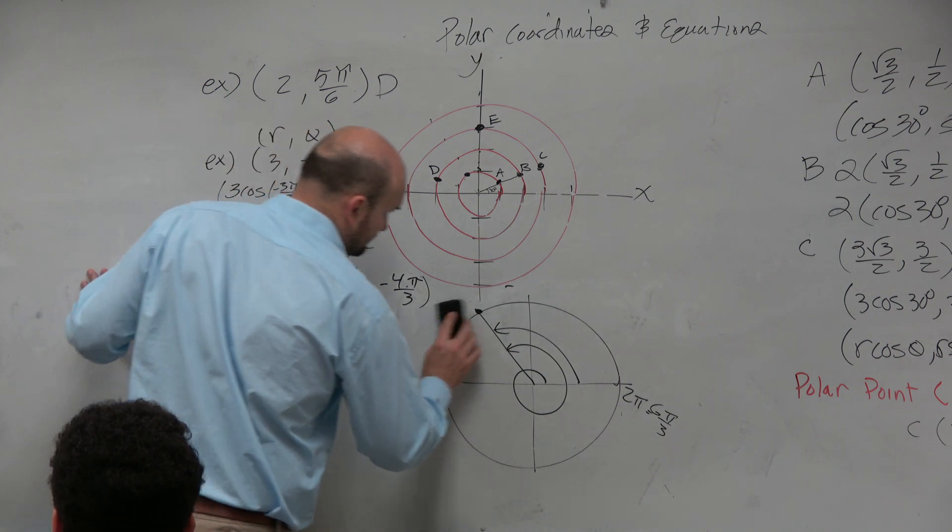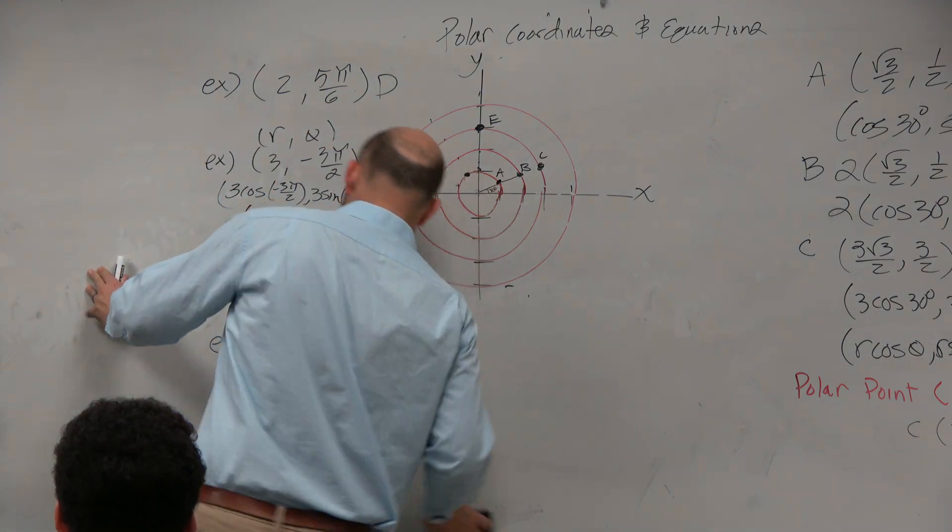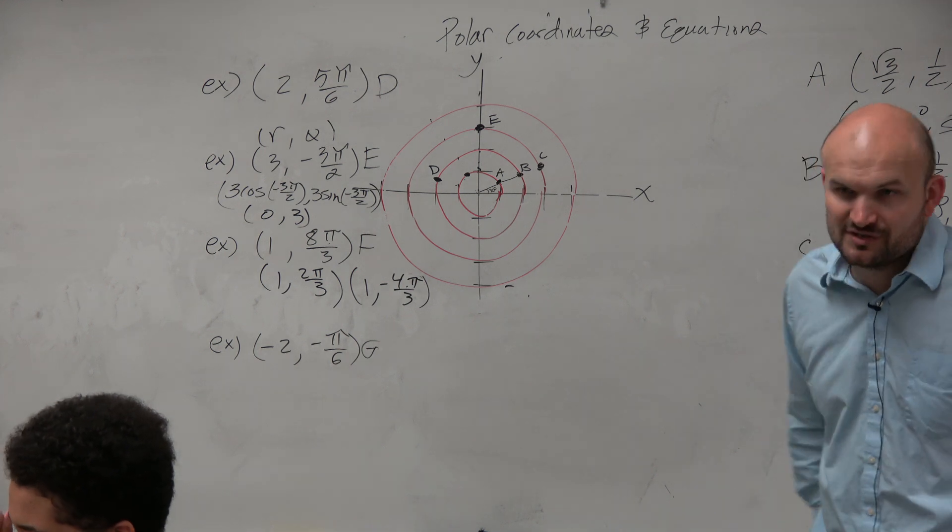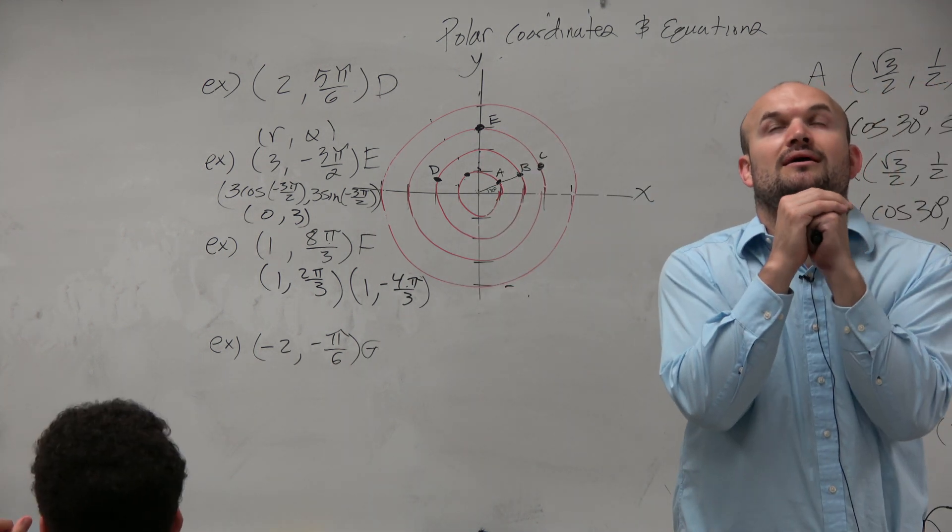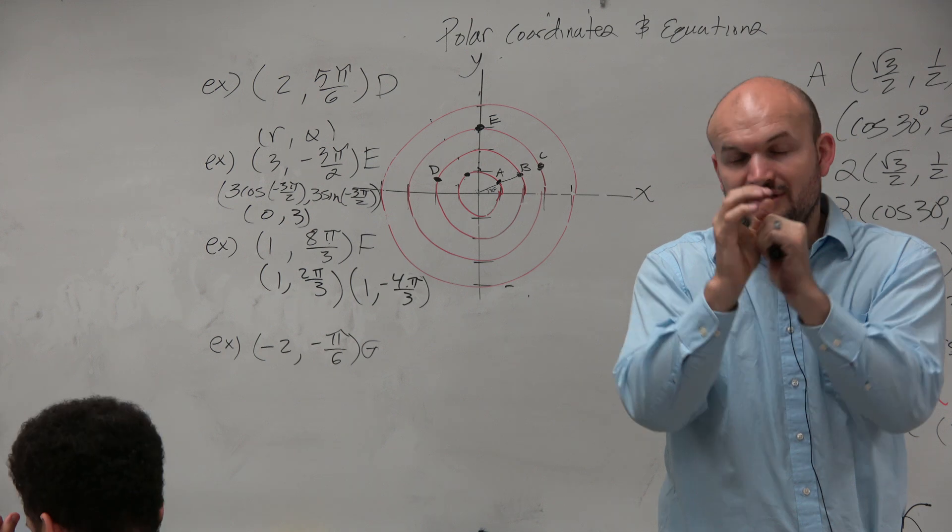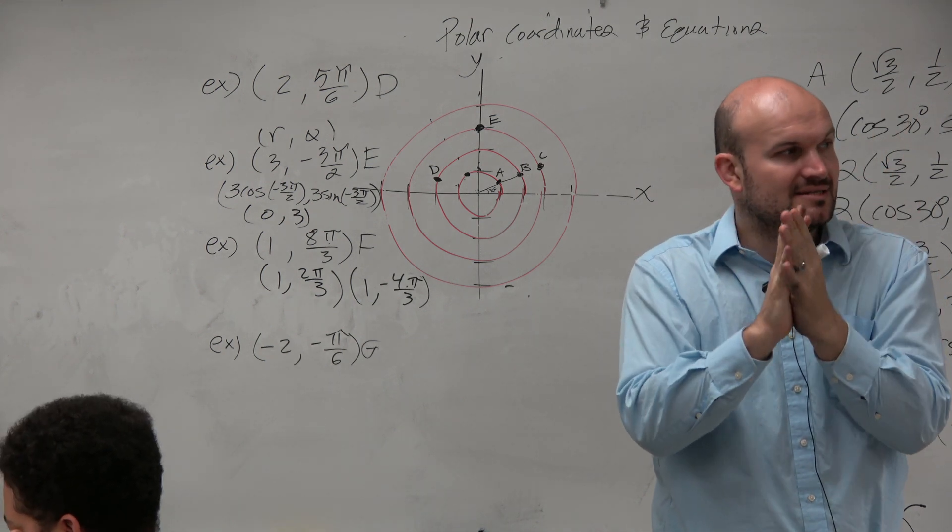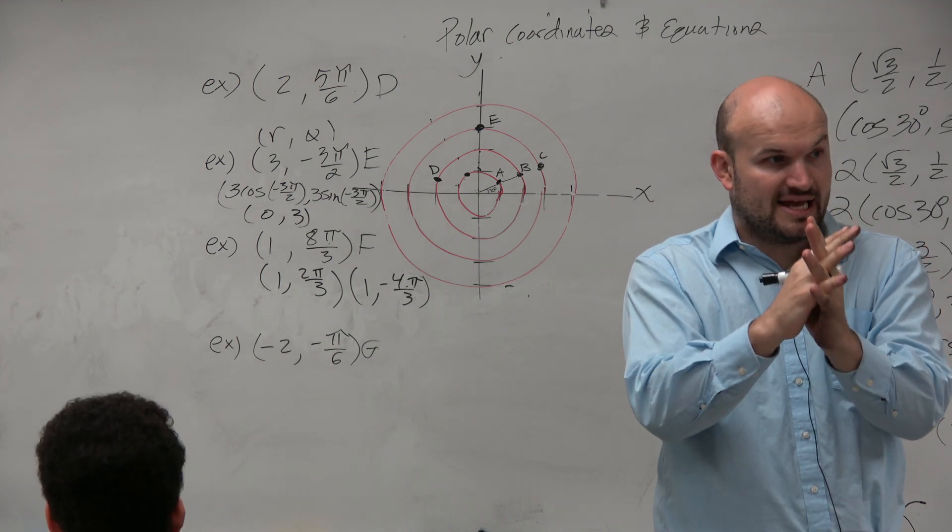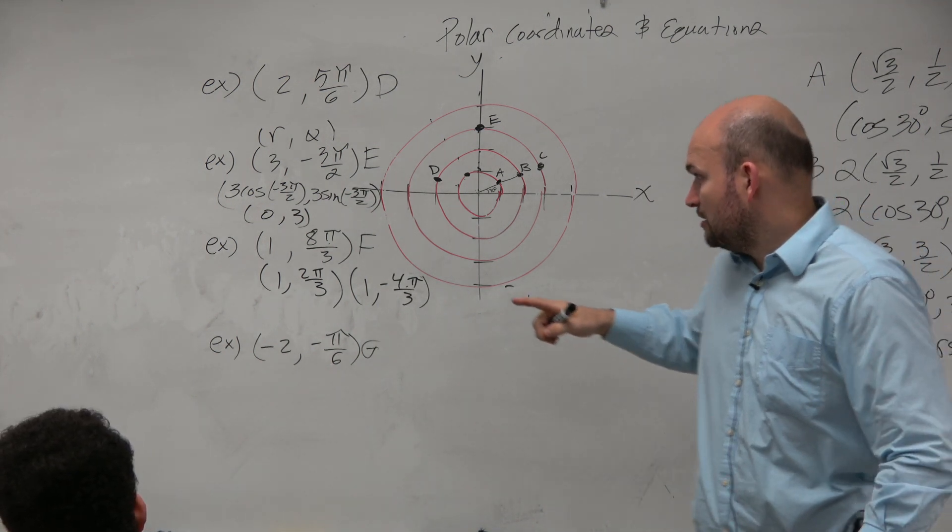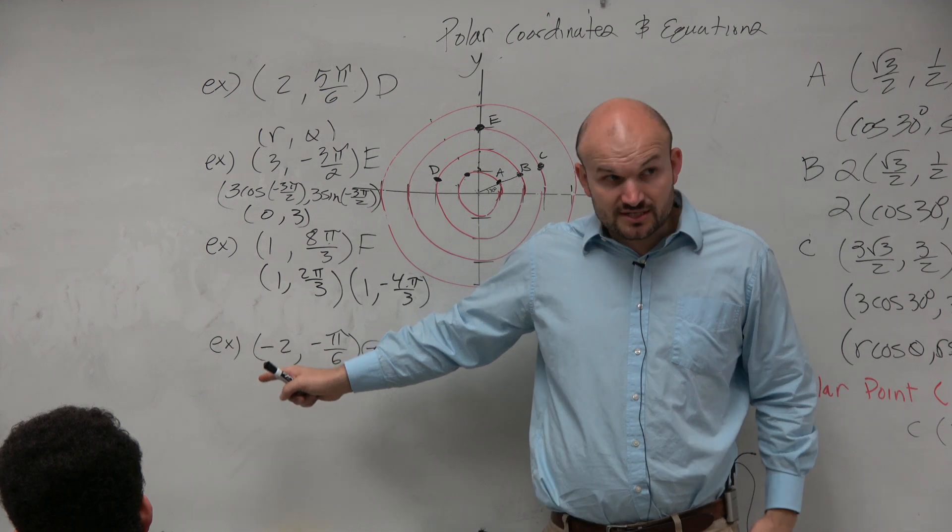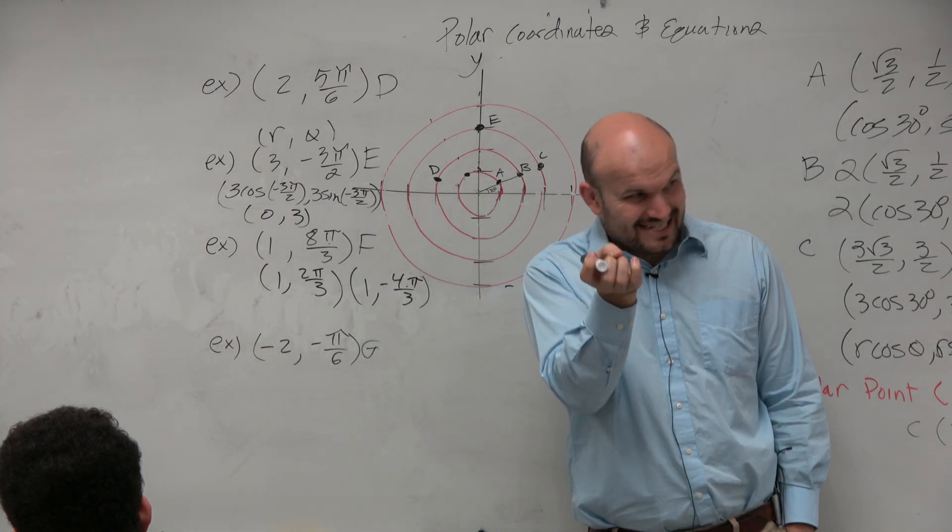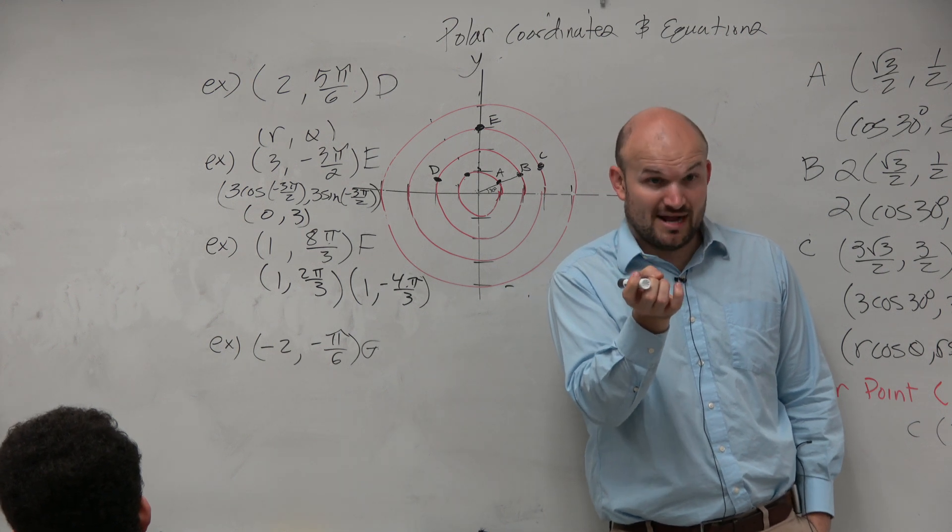The next example is to graph the point negative 2 comma negative pi over 6. So what I would recommend doing, or at least the way that I'm going to explain this, is let's look at this in rectangular form to understand that point. Because a radius of 2 doesn't really make sense right now if we think about it as a radius of negative 2, because distance cannot be negative, correct?